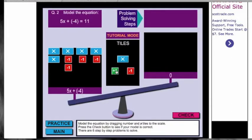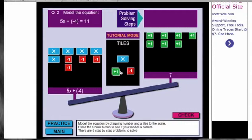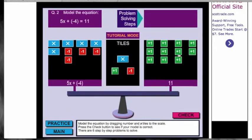Now we're going to add 11 positive ones over to the right side. Now you see that we have 5x minus 4 equals 11.